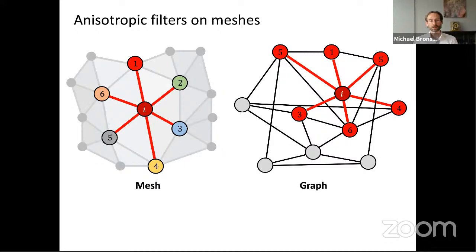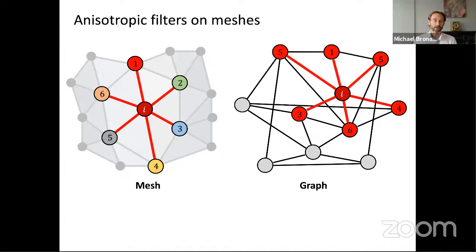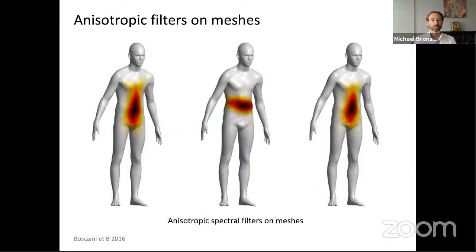On meshes, we have a more optimistic situation. Meshes have more structure — they're locally Euclidean. Therefore, we still have an ambiguity of, for example, how to choose the first node. But once we've chosen it, we can order all the rest of the nodes canonically — for example, using clockwise orientation. So here, instead of permutation invariance, I have rotation ambiguity, and we can use it to define anisotropic diffusion processes.